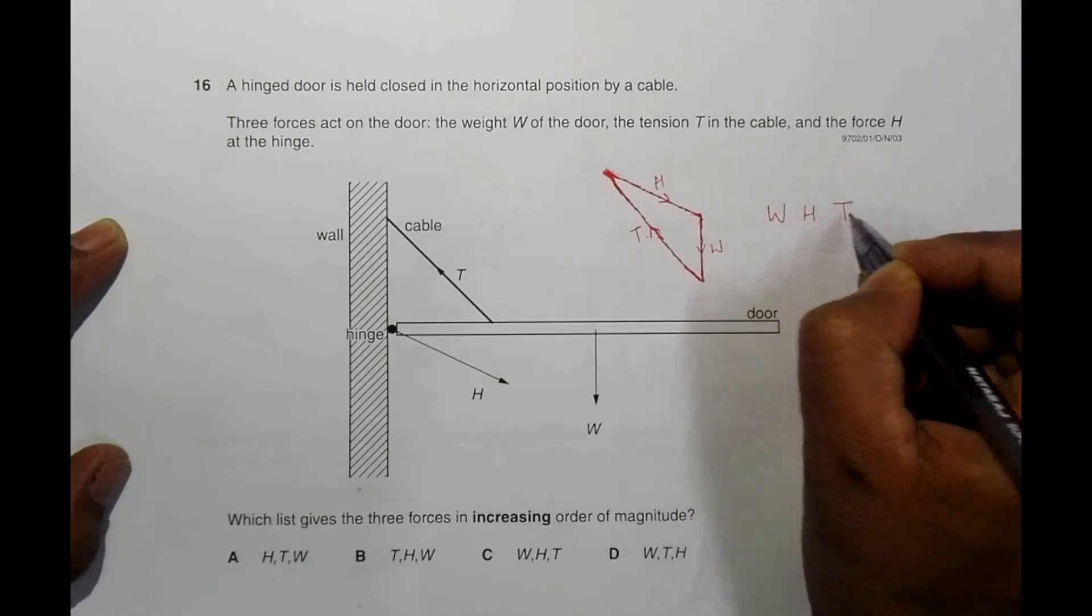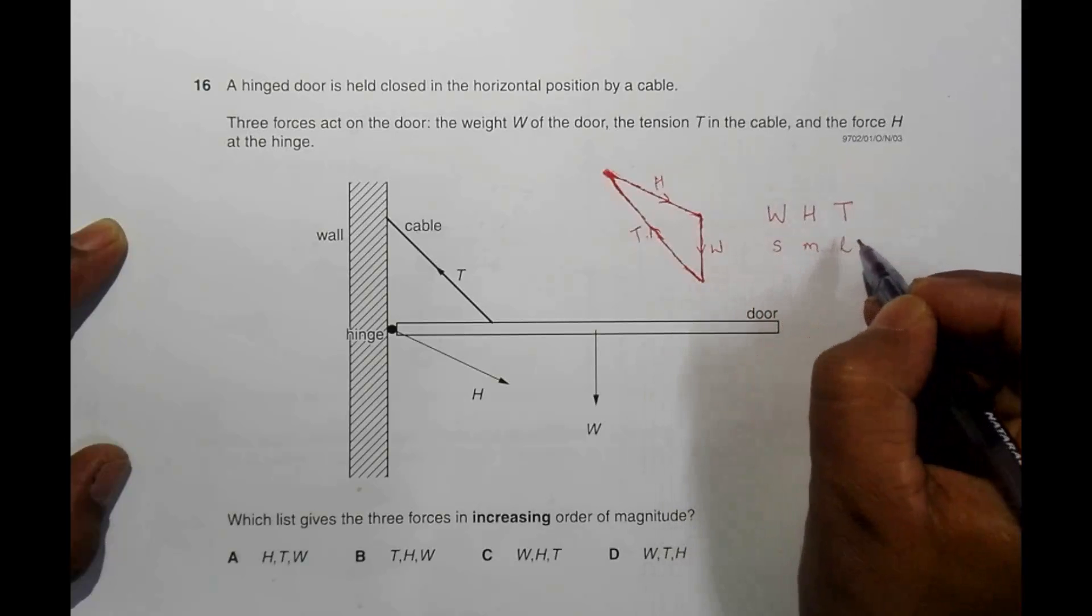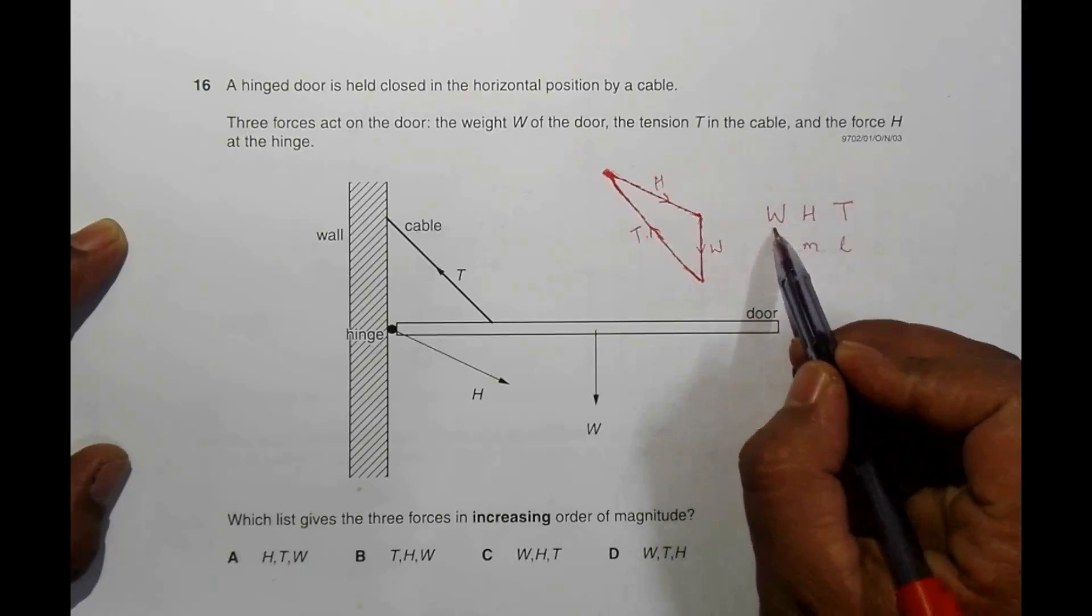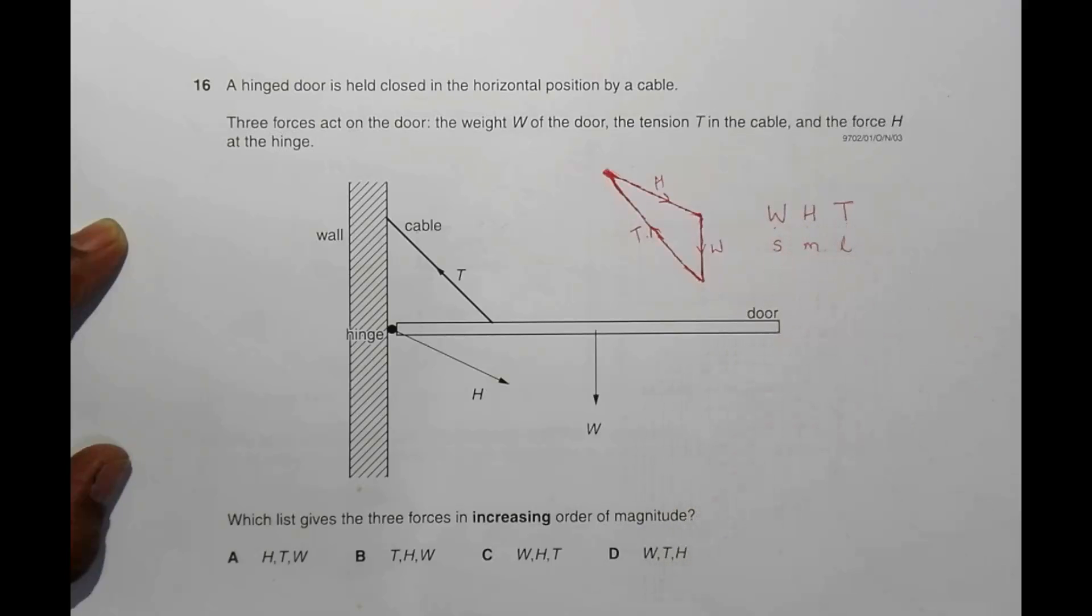H is the smallest and W is medium. So W is smallest, H is medium, and T is the largest. So this is smallest, this is medium, and this is large. So in increasing order it should be W first, H, then T. So C is the correct choice for this increasing order.